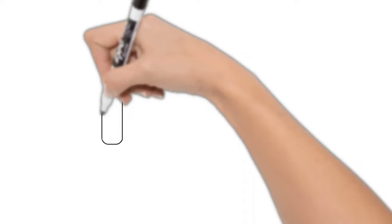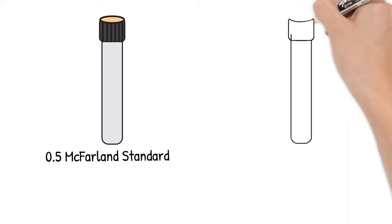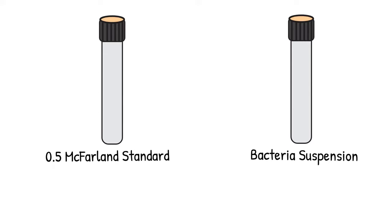A 0.5 McFarland standard provides turbidity comparable with that of bacteria suspension. Bacteria that has the same turbidity as 0.5 McFarland standard would contain approximately 1.5 x 10 to the 8 colony forming units per milliliter or CFU per ml.